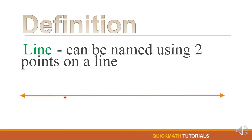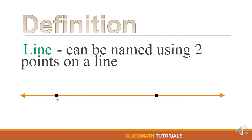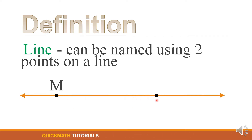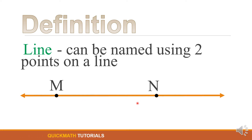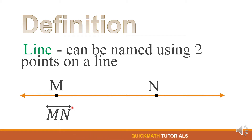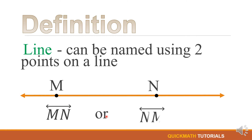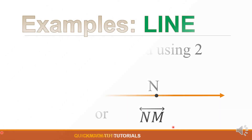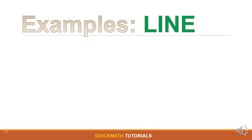Also, a line can be named using two points on a line. For example, we have a line with two points: point M and point N. In naming this line, we write line MN — that is the symbol for this line — or we can also name it line NM.